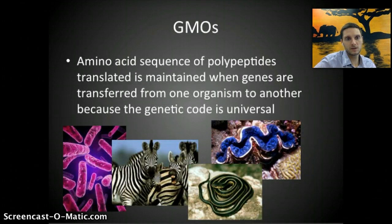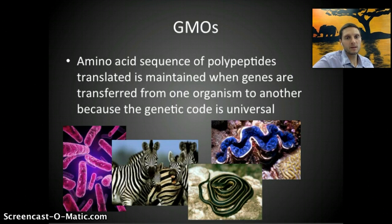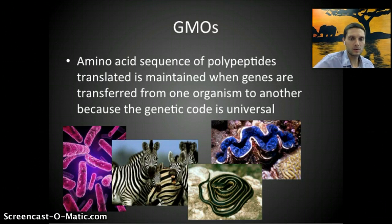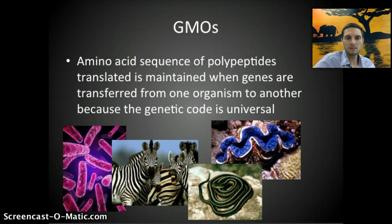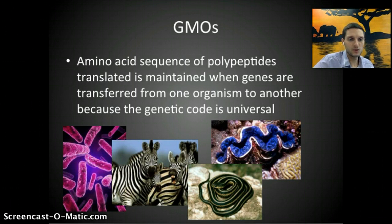GMOs are possible because the amino acid sequence of polypeptides — of proteins — that is translated is maintained when genes are transferred from one organism to another. This is because the genetic code is universal. Each living species on the planet has DNA made up of four different types of nucleotides: adenine, thymine, guanine, and cytosine. Those four nucleotides put together in different orders, sequences, and amounts create all of the wide diversity of life on the planet. Because all living species are made up of the same genetic material, it's possible to take a gene from one species and transfer it to another.